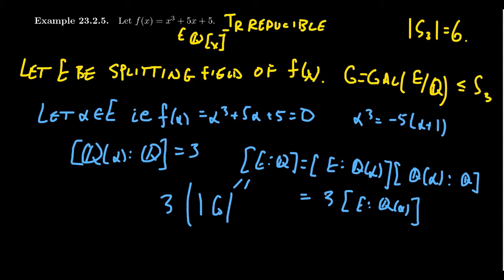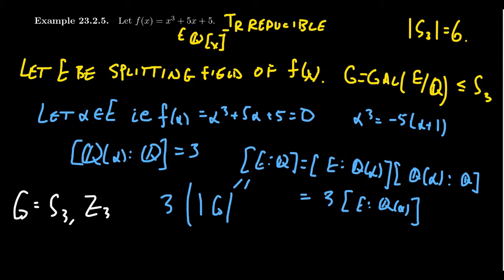How many subgroups of S3 have order divisible by three? We get that G equals either all of S3 or the alternating group A3, which in this case is just the cyclic group of order three. So for any irreducible cubic polynomial over the rational numbers, the Galois group is either the cyclic group of order three or the symmetric group S3 — those are your two options.